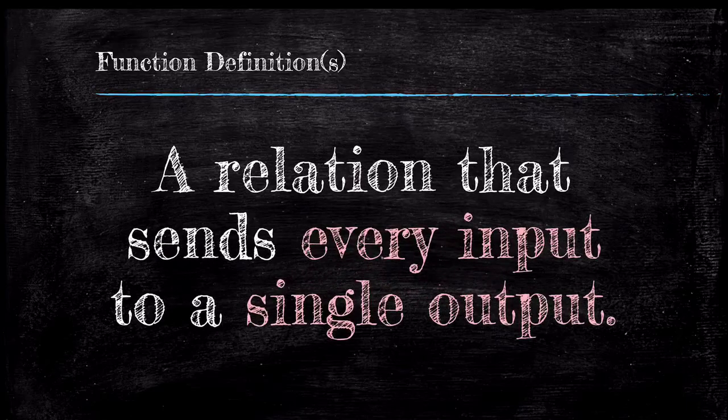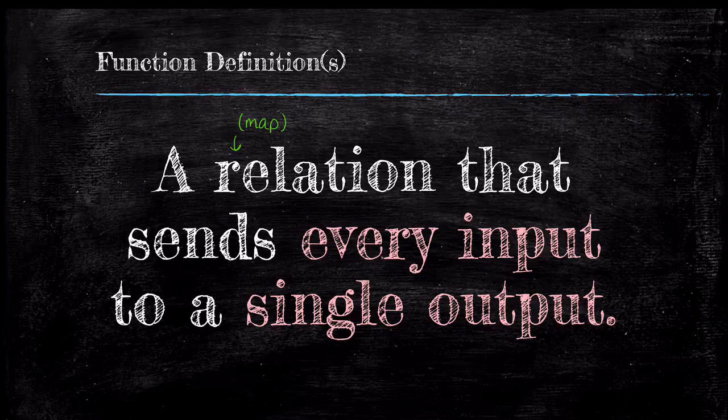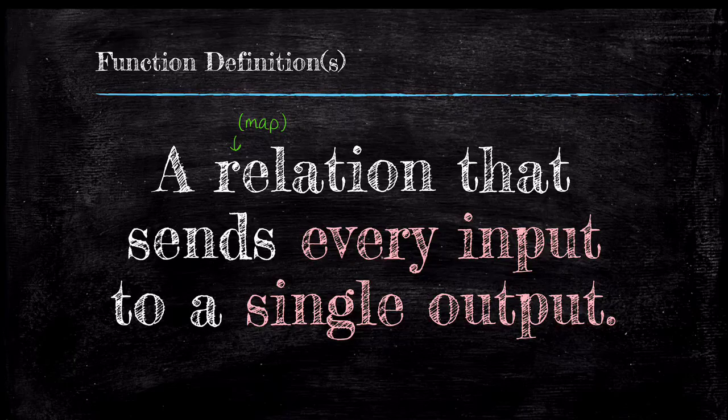My personal favorite definition is the first. A function is a relation that sends every input to a single output. While succinct, the wording here needs to be clarified. This does not mean that every input must get sent to the same output. The easiest way to understand this property is with a visual test.